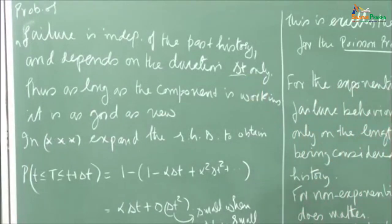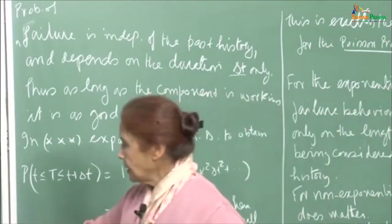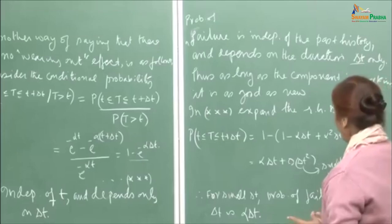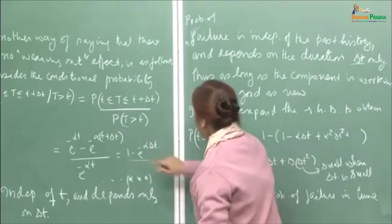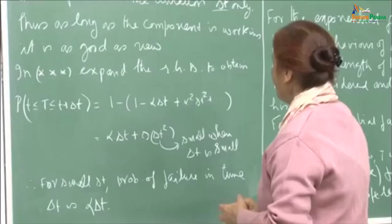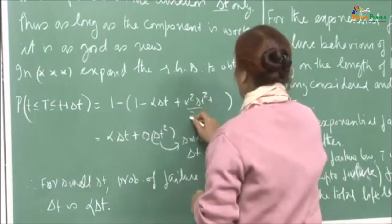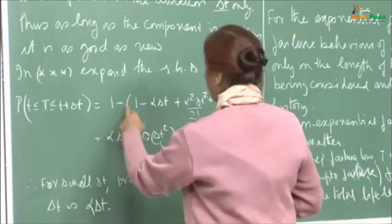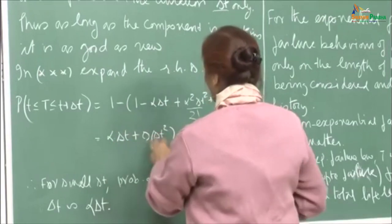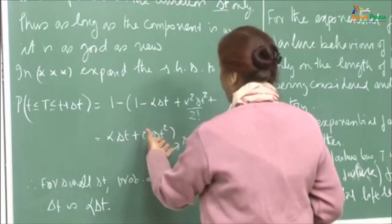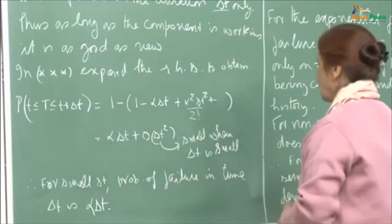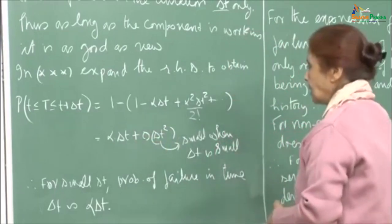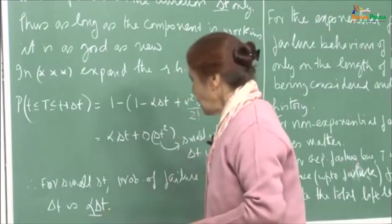As long as the component is working, it is as good as new. Now, in this equation, if we expand e raised to minus alpha delta T, we get 1 minus alpha delta T plus higher-order terms involving delta T squared, delta T cubed, and so on. When the 1 cancels, we have alpha delta T plus higher-power terms. When delta T is small, we can ignore these terms, and therefore, for small delta T, the probability of failure in time delta T is proportional to alpha delta T.